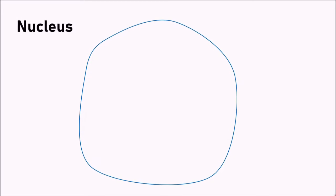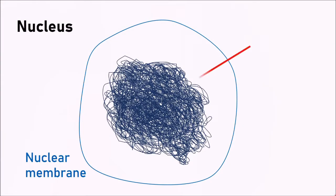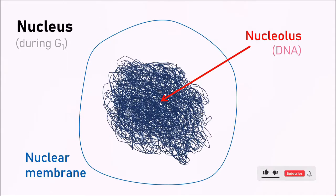Let's take a closer look at the nucleus. This is the nuclear membrane. Inside we have a dense area called the nucleolus. This is first of all the site of RNA synthesis, but also where all the DNA is wound up together. This diagram shows the nucleus during the G1 phase of the cell cycle, meaning the cell is not yet preparing to undergo division — it is just going through simple everyday processes, for example protein synthesis.